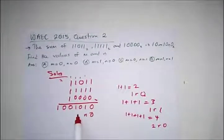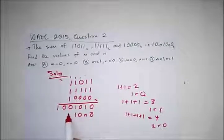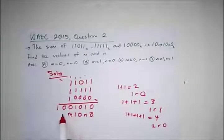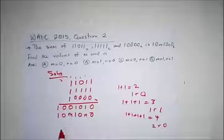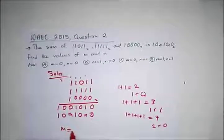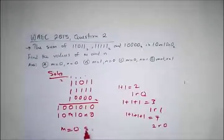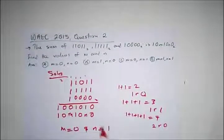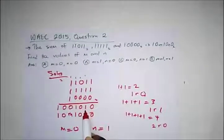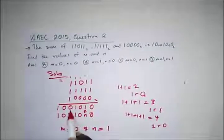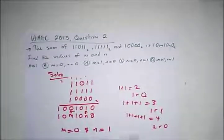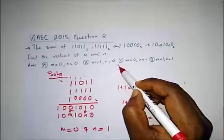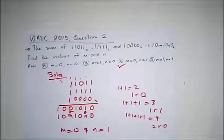Our answer reads: 0, N, 0, 1, M, 0, 1. So M is equal to 0 and N is equal to 1. The correct answer is option C.